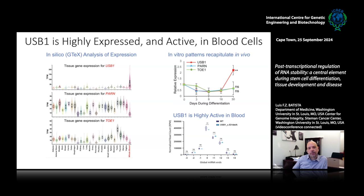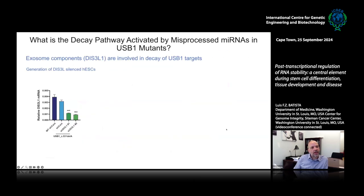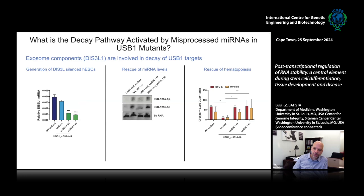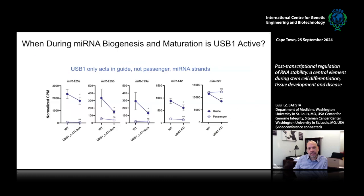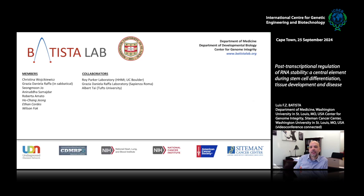We can actually see the effect of USB1 in blood is so potent that in whole blood three prime end sequencing we can capture increased adenylation across the entire blood system in our mutants — not only on the targets of USB1, but globally. We believe these molecules are being decayed by the exosome; if we inhibit the exosome we can rescue hematopoiesis in USB1 mutants. We're doing more work to understand when in the microRNA processing pathway this happens, and we now know that USB1 only acts on the guide strand and not the passenger microRNA strand, so they have to be loaded onto Argonaute for USB1 to be active.